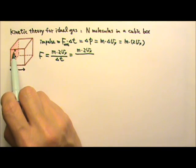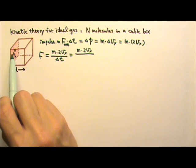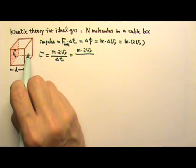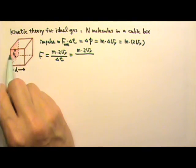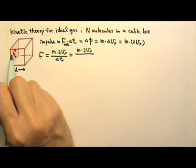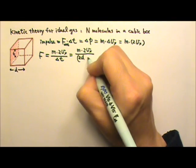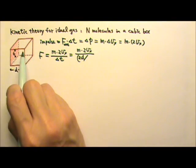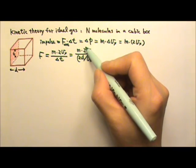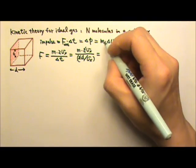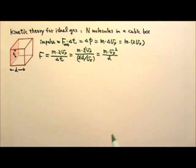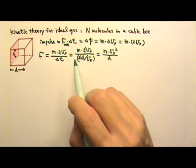The time it takes for the particle to go to the other side and back would be the distance traveled divided by the speed in this direction. So delta t would be the distance traveled back and forth, 2d, divided by the velocity's x component, vx. Canceling the 2 and simplifying, I get m times vx squared divided by d. And this is the force from one molecule only.